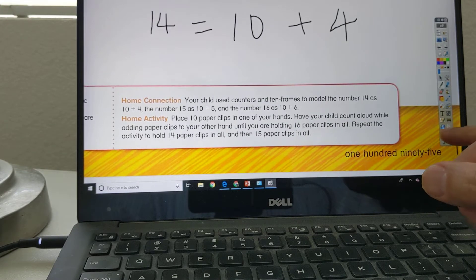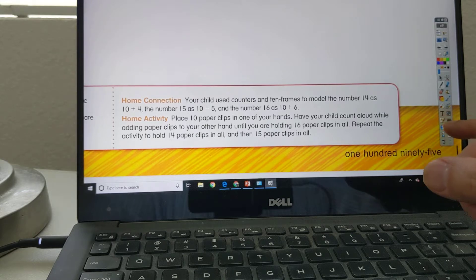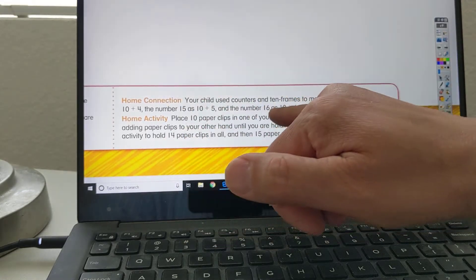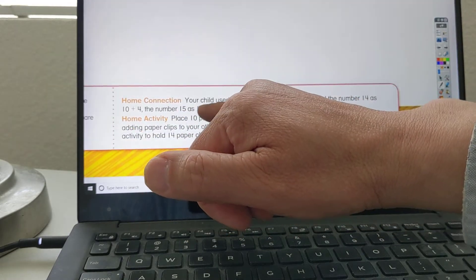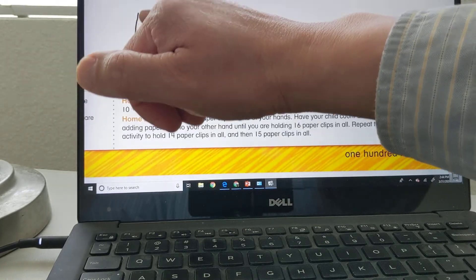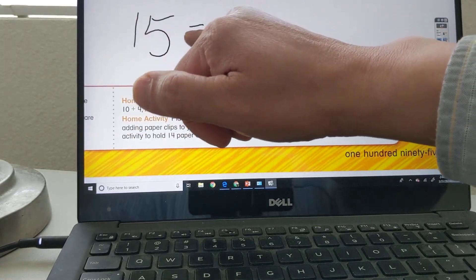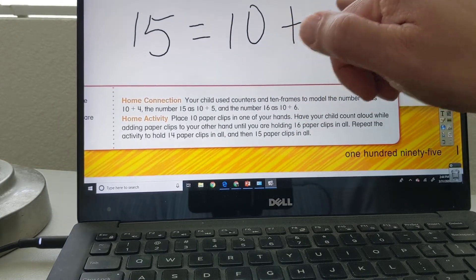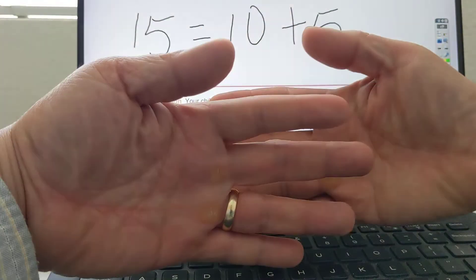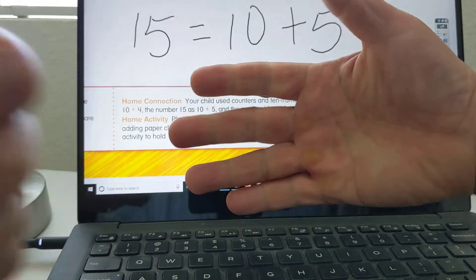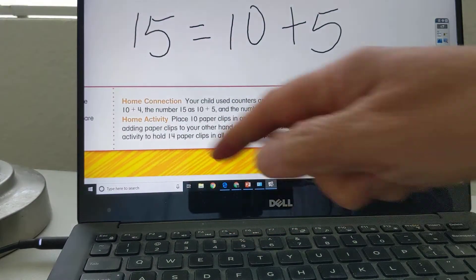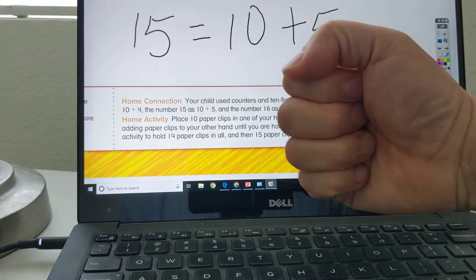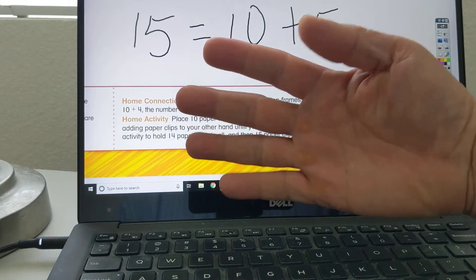And then 15, right here. 15 is 10 plus 5. 10 plus 5 is 15. So 15 is equal to 10, all the fingers, plus 5 more fingers. Simple as that.